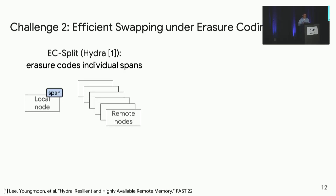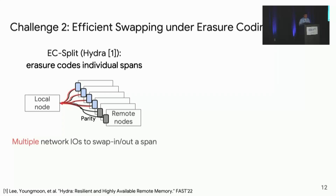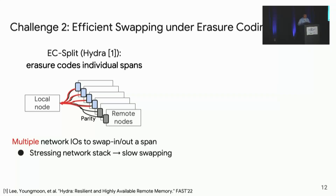However, the drawback of EC Split is that the local node normally needs multiple network I/O operations to swap in or out a single span due to span splitting. These excessive network I/O operations stress the network stack and lead to slow swapping. It also makes data fetches vulnerable to stragglers — for example, network stragglers — causing high tail latency for remote accesses.